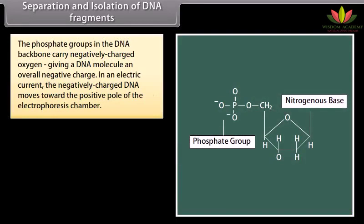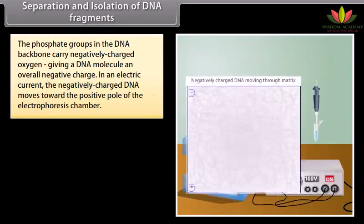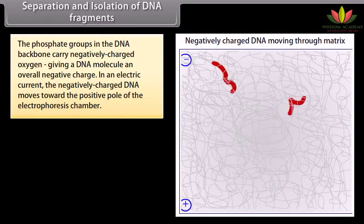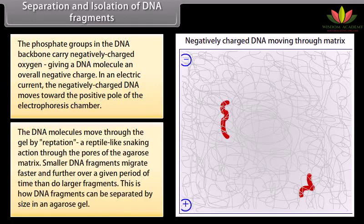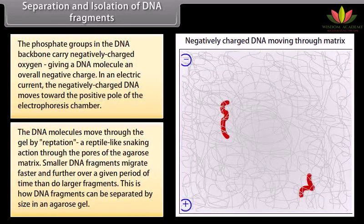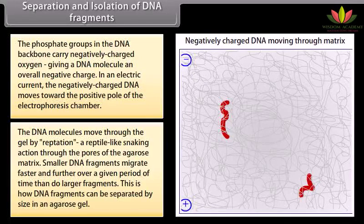This makes it easier to load the samples and visually track the DNA migration through the gel. The phosphate groups in the DNA backbone carry negatively charged oxygen, giving a DNA molecule an overall negative charge. In an electric current, the negatively charged DNA moves towards the positive pole of the electrophoresis chamber. The DNA molecules move through the gel by reptation — a reptile-like snaking action through the pores of the agarose matrix. Smaller DNA fragments migrate faster and further over a given period of time than larger fragments. This is how DNA fragments can be separated by size in an agarose gel.